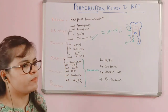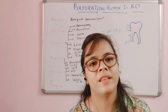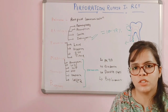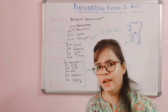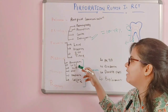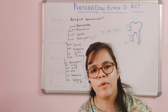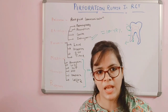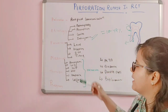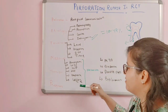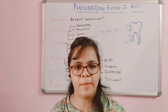Looking at the history of materials used, earlier when newer materials were not available, amalgam was the first material used to repair perforations in root canal treatment. Then came GIC. Many clinicians repaired perforations using gutta-percha — thermoplasticized gutta-percha was injected into the canal and sealed with sealer. Other older materials include zinc oxide eugenol, composite, and calcium hydroxide — all available earlier for repairing perforations.